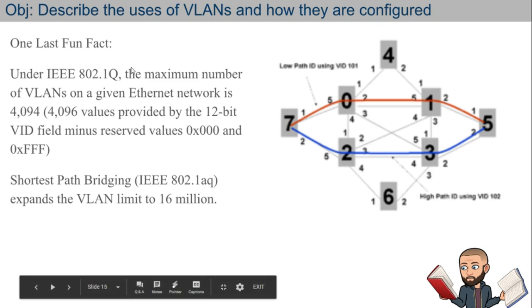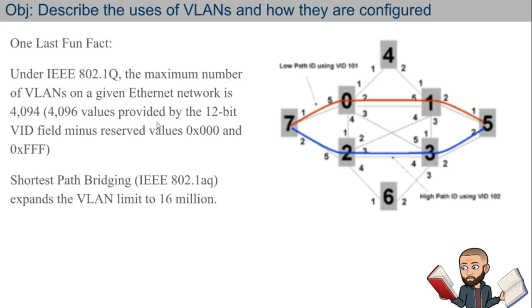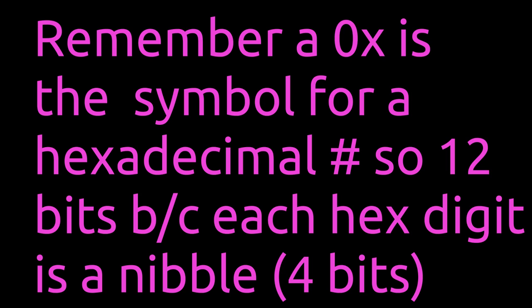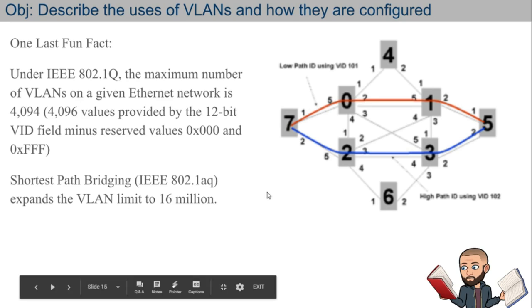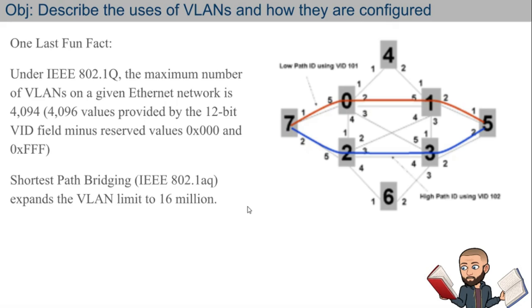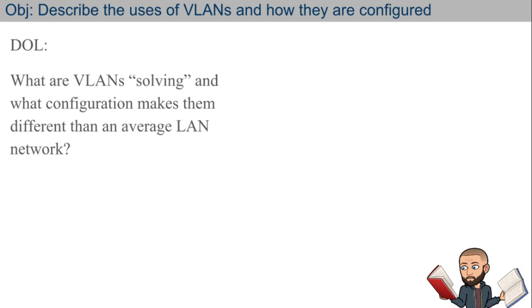One last fun fact: using this standard, the maximum number of VLANs on a given ethernet network is about 4,000 — all because of a 12-bit VLAN ID field. We have 12 bits to represent what VLAN the data is looking for or coming from. There are tricks you can play with 802.1AQ, also known as Shortest Path Bridging, to expand that to 16 million VLANs — a humongous number. VLANs are really powerful and cool. What are VLANs solving, and what configuration makes them different than an average LAN? Professor H loves his bits and bytes — tell me what's different at that level.